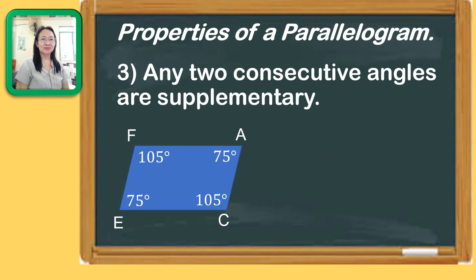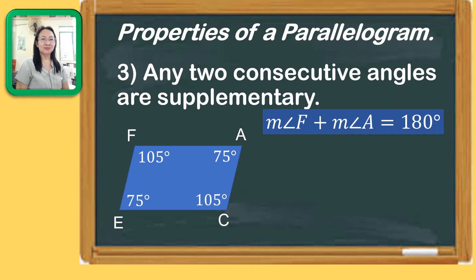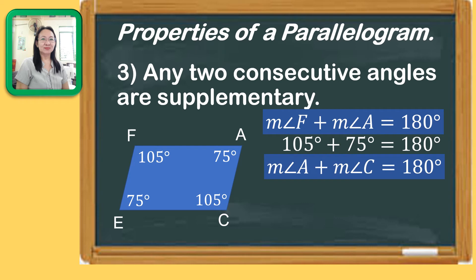Using our previous figure of parallelogram FACE, let us consider angle F and angle A as our consecutive angles. So the measure of angle F plus the measure of angle A is equal to 180 degrees. Substituting their corresponding angle measures, angle F is 105 degrees and angle A measures 75 degrees. Adding 105 and 75 degrees, the sum is 180. The same applies to the measure of angle A and the measure of angle C as consecutive angles — adding 75 and 105 degrees gives a sum of 180 degrees.